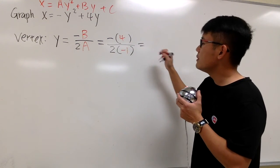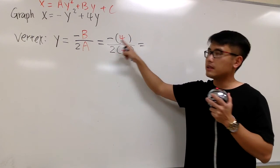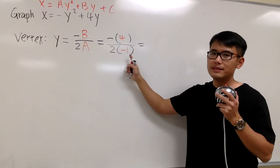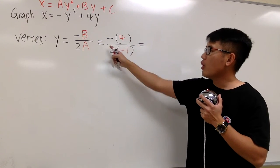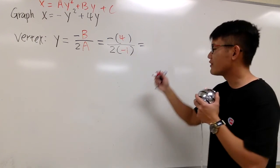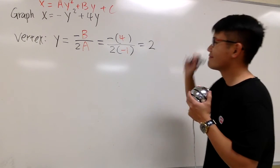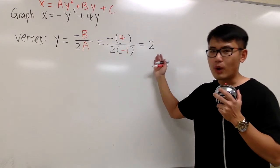And as we can see, negative 4 on the top over 2 times negative 1, which is negative 2. Negative 4 over negative 2, we have positive 2. So this is just the y value for the vertex.